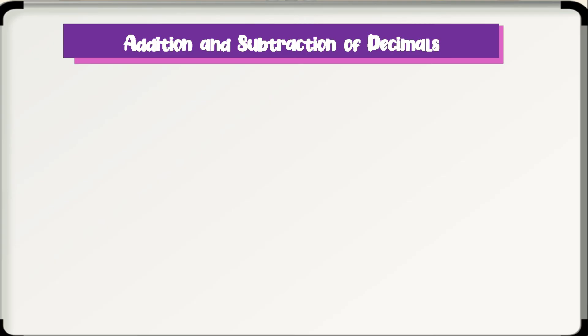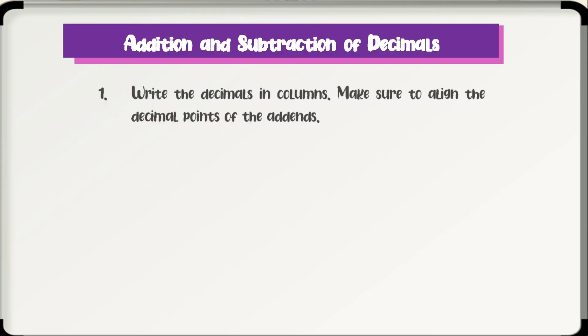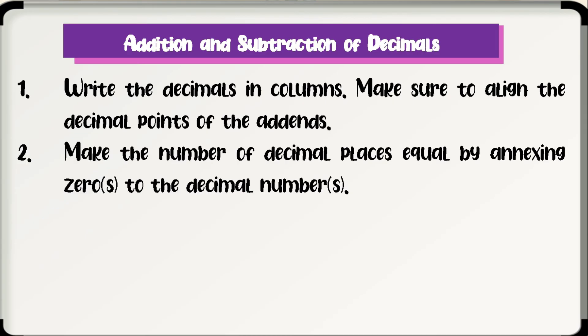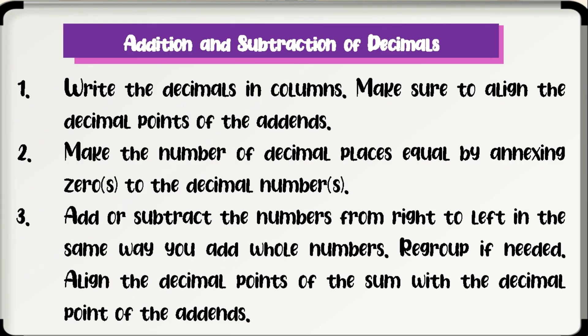To add or subtract decimals, follow these steps. Step 1: write the decimals in columns, making sure to align the decimal points of the addends. Step 2: make the number of decimal places equal by annexing zeros to the decimal numbers. Step 3: add or subtract the numbers from right to left in the same way you add whole numbers, regrouping if needed. Align the decimal point of the sum with the decimal point of the addends.